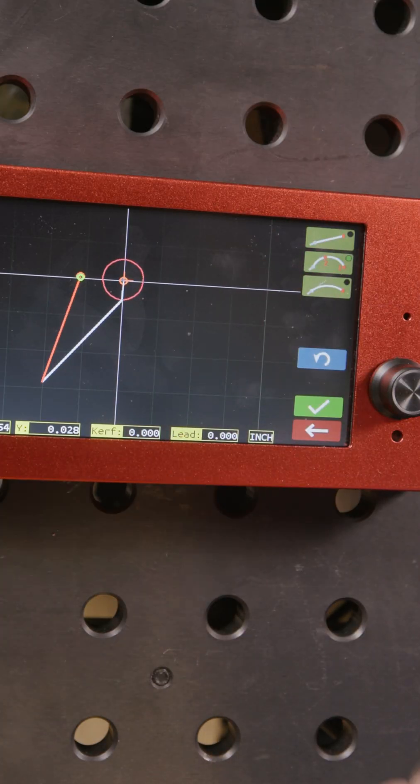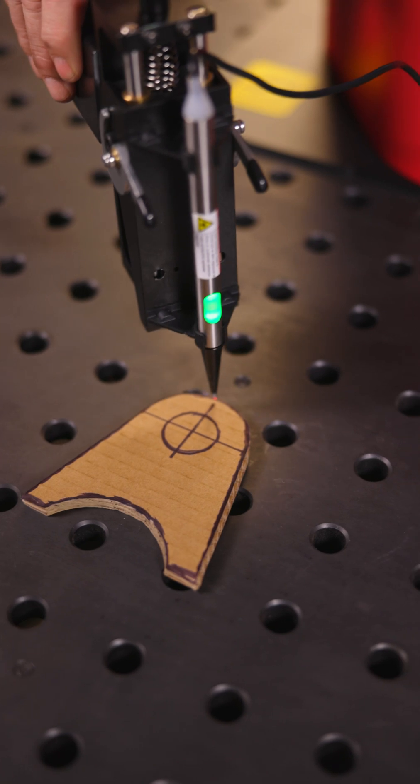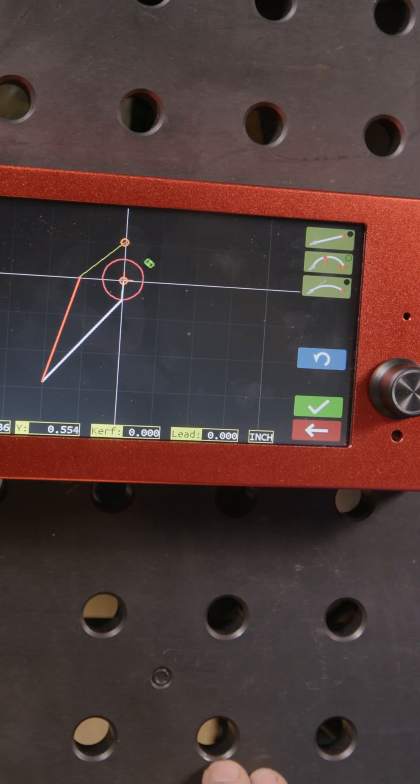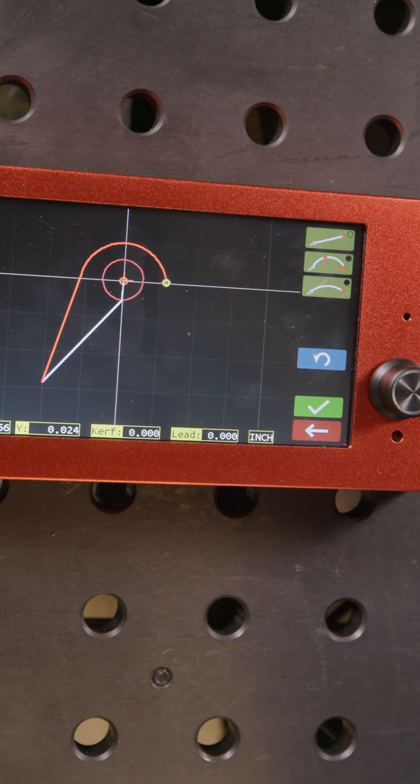and that's three-point arcs, and that allows me to come around here and put the second point and the third point, and it creates a perfect radius for you.